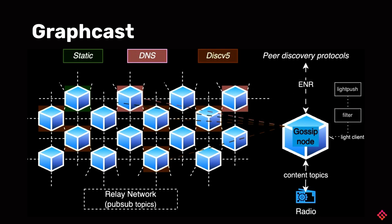The second way is through DNS discovery, where a domain operator hosts a static URL representing an ENR tree that can be resolved into a dynamic list of ENRs. You rely on the domain operator to keep a list of functioning nodes to join the relay network. Our team hosts two of these URLs — one on testnet and one on mainnet. This is convenient but centralized: when you join the network using our nodes, you are trusting us to be a good-faith operator.